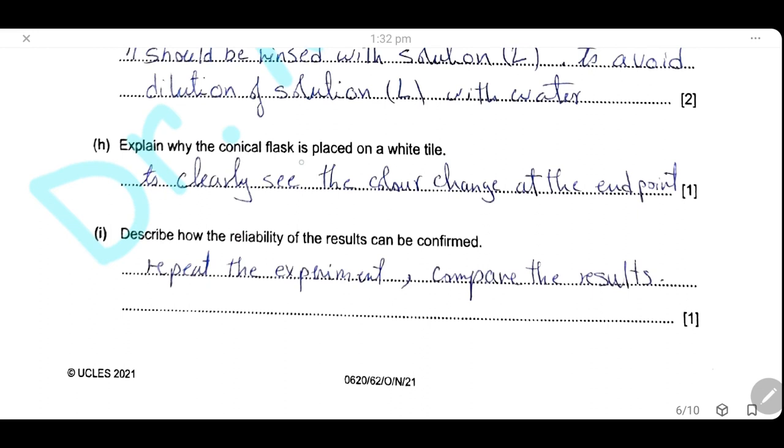Explain why the conical flask is placed on a white tile. The white tile makes you clearly see the color change at the endpoint.